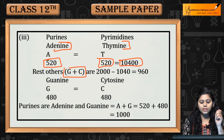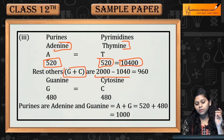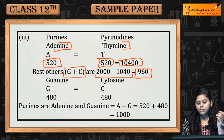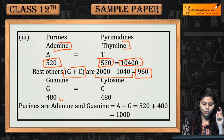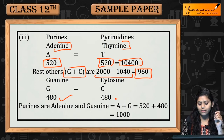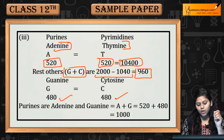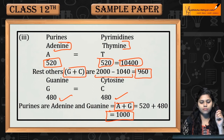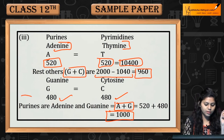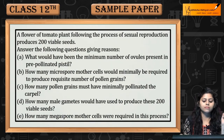The rest is G plus C. So 2000 minus 1040 equals 960. If guanine is 480, then cytosine is also 480. Total purines, A plus G, equals 520 plus 480, which is 1000. So purines will be 1000.